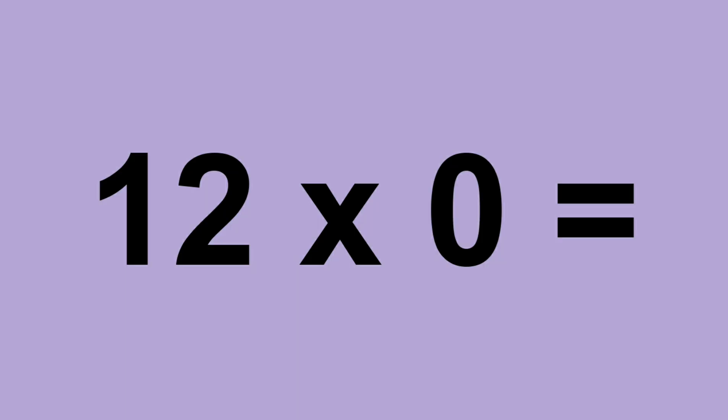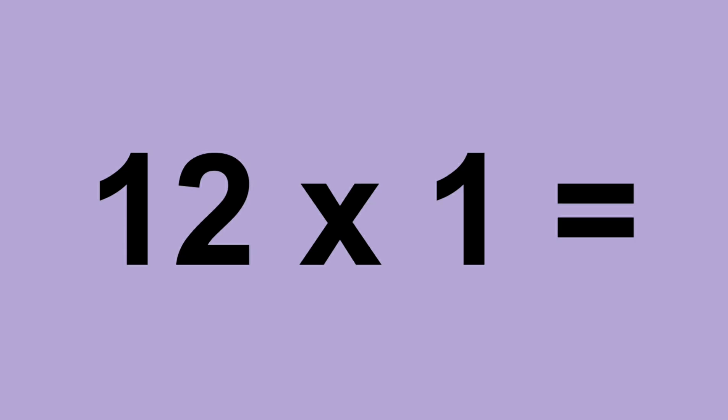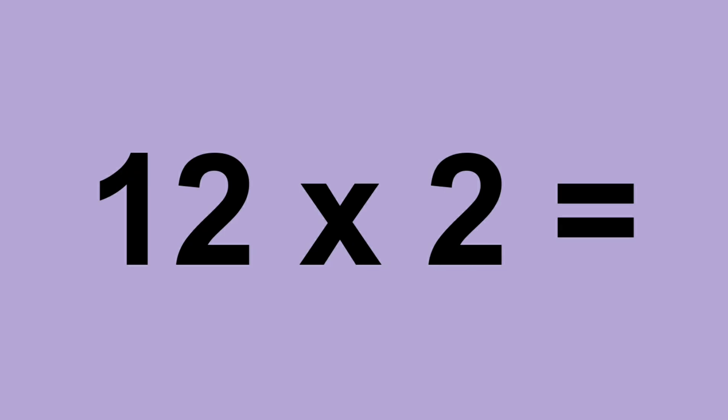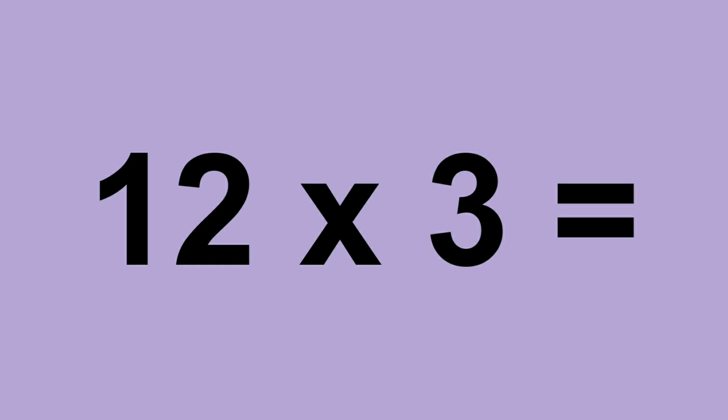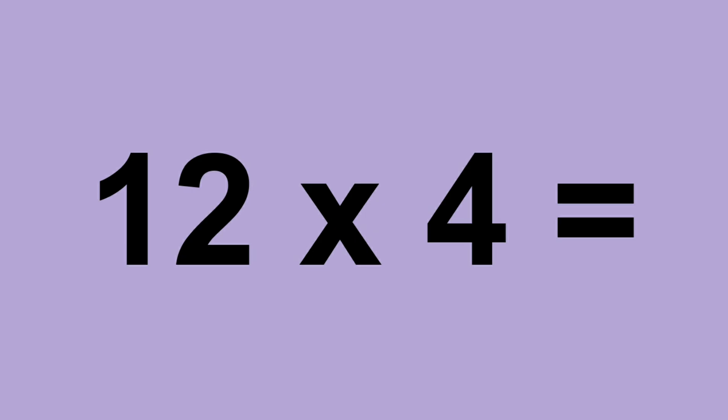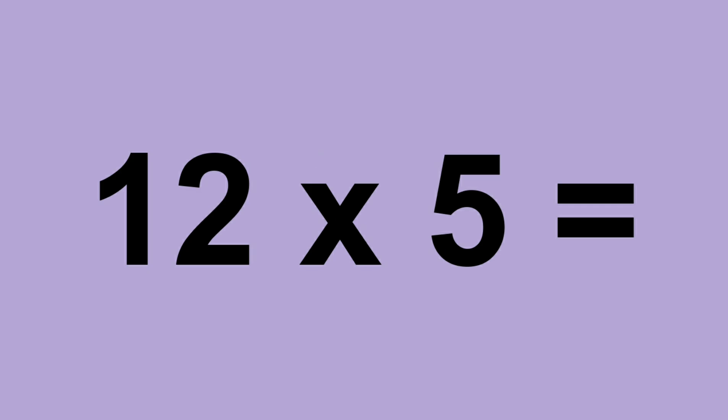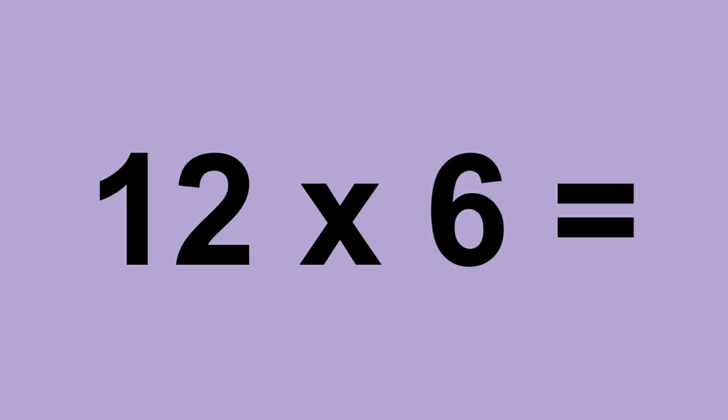Twelve times zero equals zero. Twelve times one equals twelve. Twelve times two equals twenty-four. Twelve times three equals thirty-six. Twelve times four equals forty-eight. Twelve times five equals sixty. Twelve times six equals seventy-two. Twelve times seven equals eighty-four.